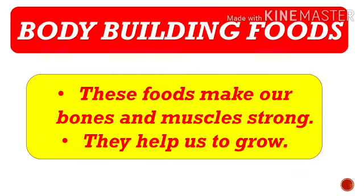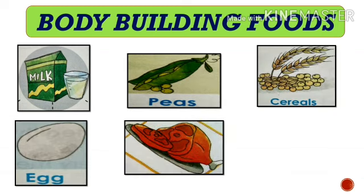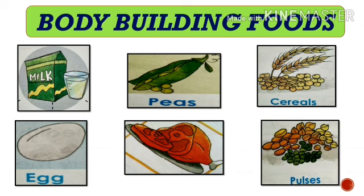Now we will discuss body-building foods. As the name suggests, these types of food help our bones and muscles — they make our bones and muscles strong and help us to grow. Some food items of body-building foods are milk, peas, cereals, eggs, meat and pulses. Pulses we can also call dal.